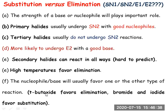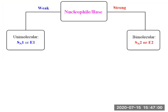Generally, bulky bases like tertiary butoxide will favor elimination reaction. But if you have a small nucleophile like bromide or iodide, substitution is favored. The size of the nucleophile or base is therefore also a critical factor in determining whether the reaction is substitution or elimination.